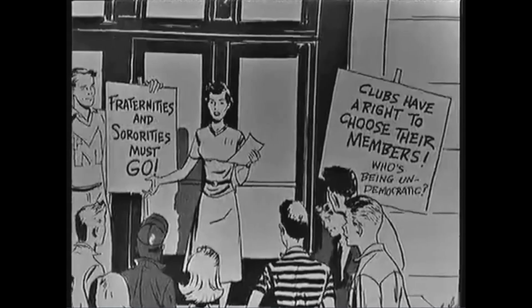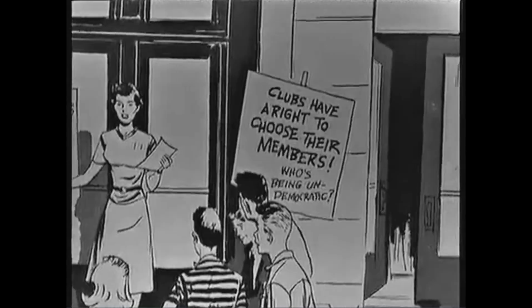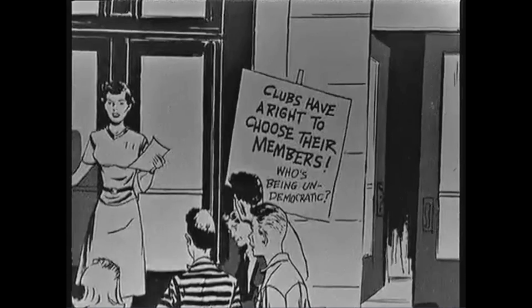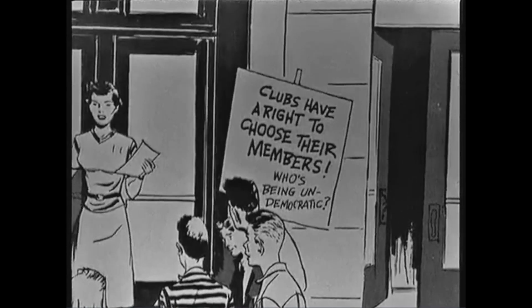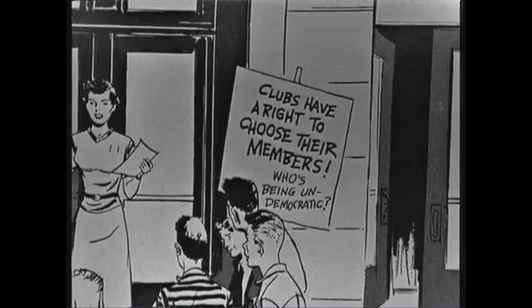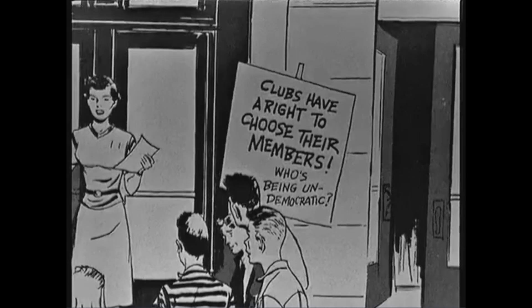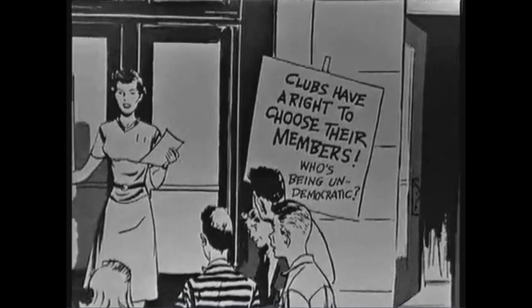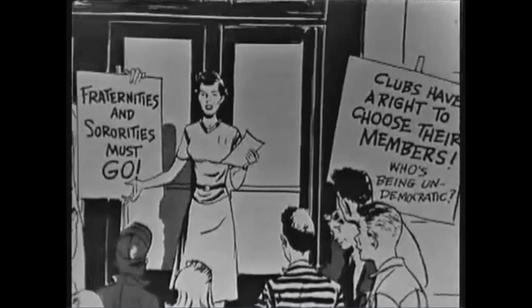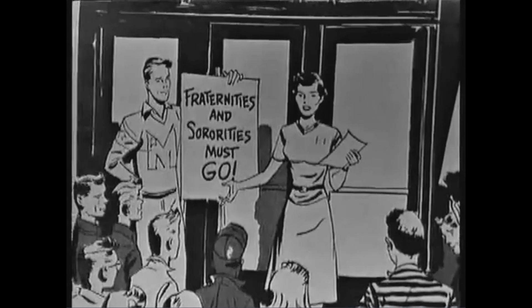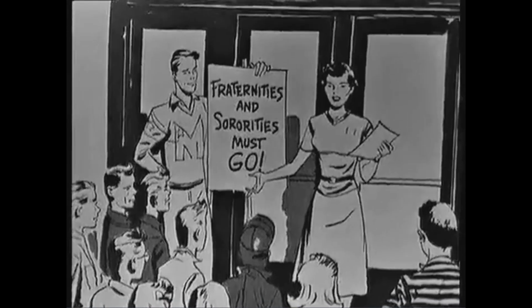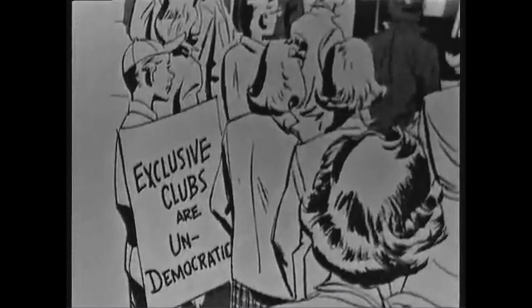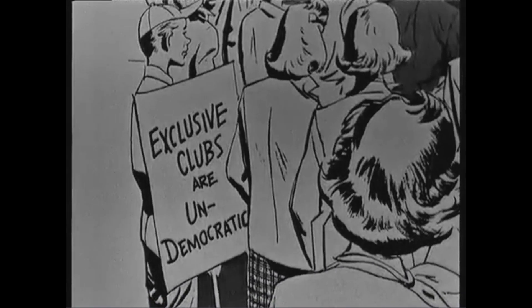Let's read these signs. There's one that says, 'Clubs have a right to choose their members — who's being undemocratic?' Another sign says, 'Fraternities and sororities must go.' And then we see another sign that says, 'Exclusive clubs are undemocratic.'